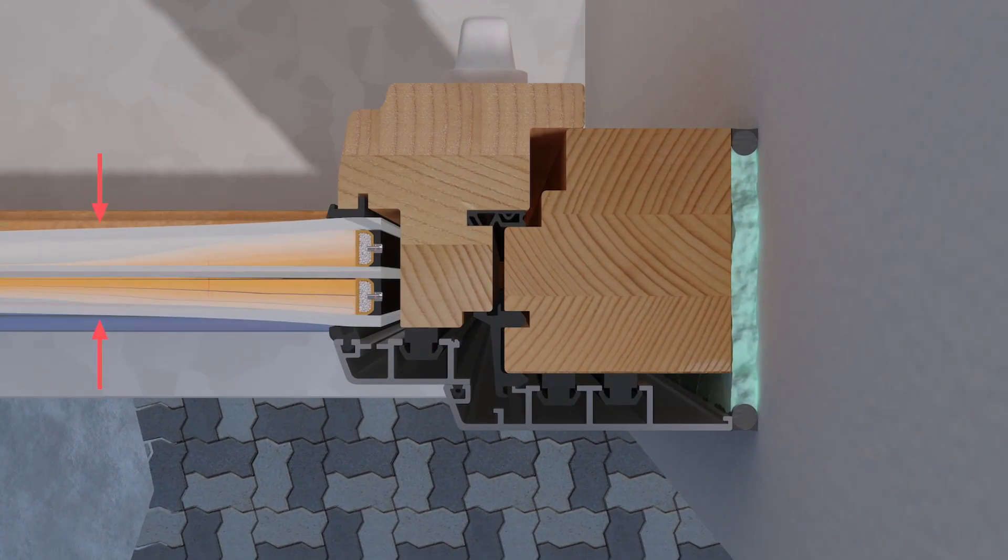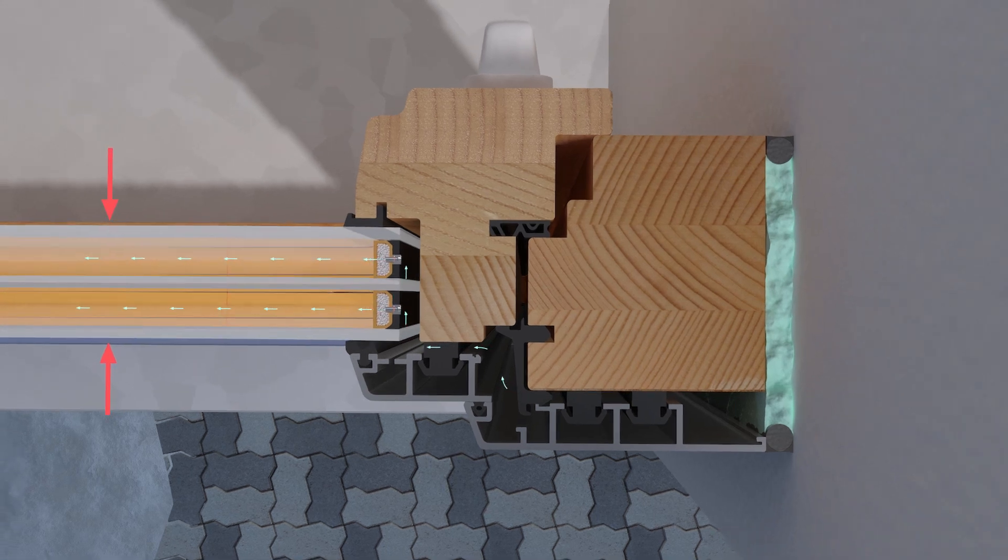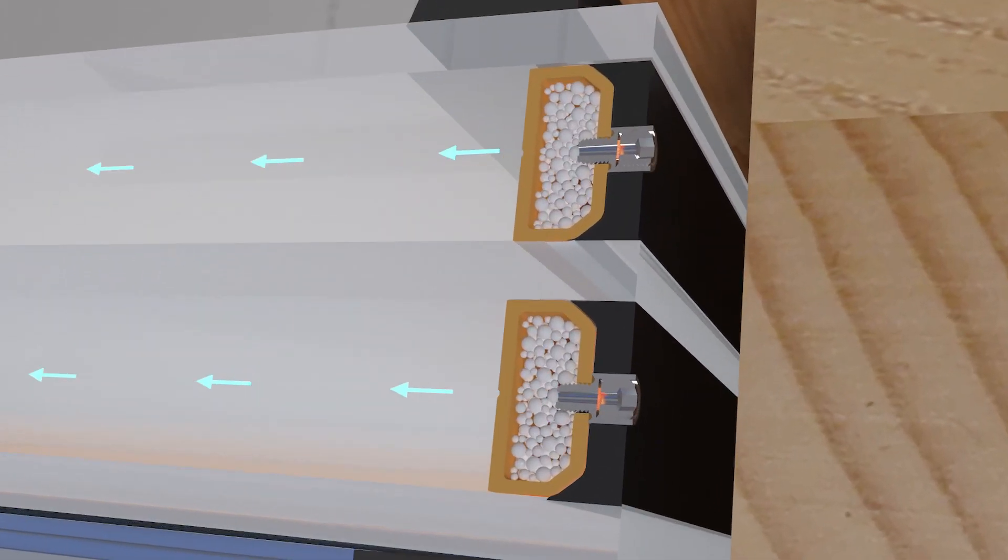In the cold, air contracts and the panes of glass bend inwards. Swiss Spacer air makes pressure equalization possible, and air slowly flows in.